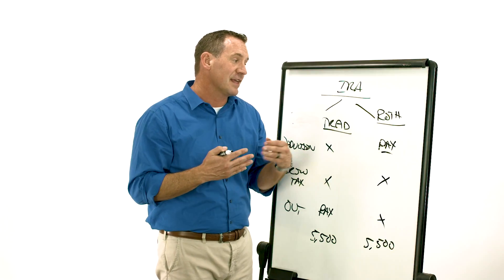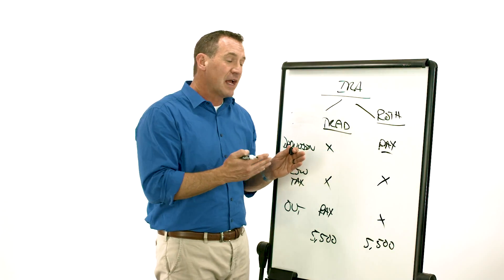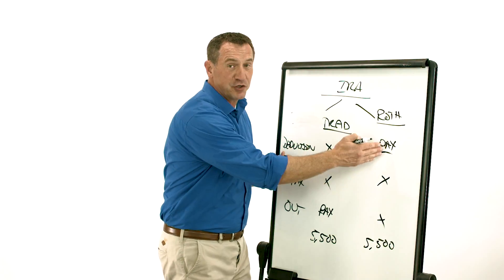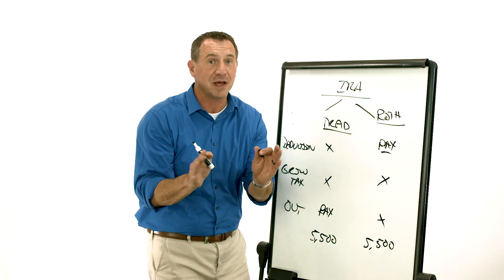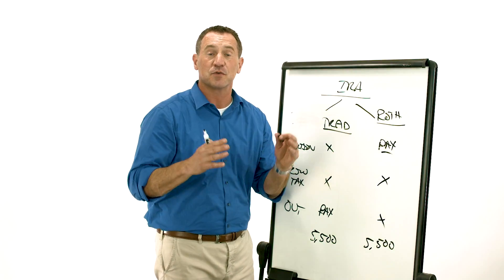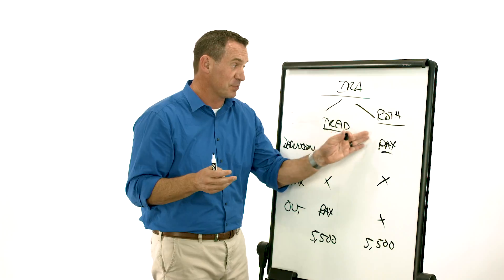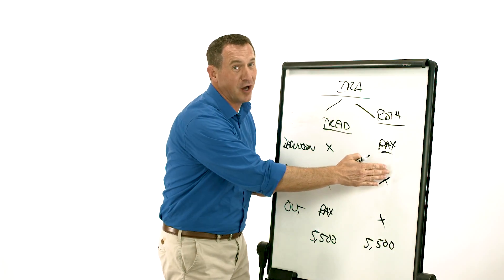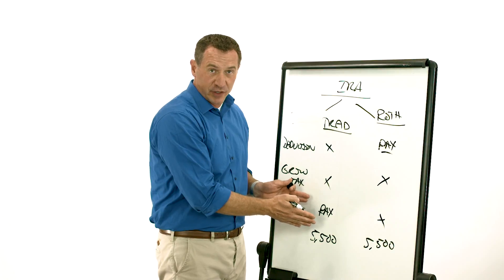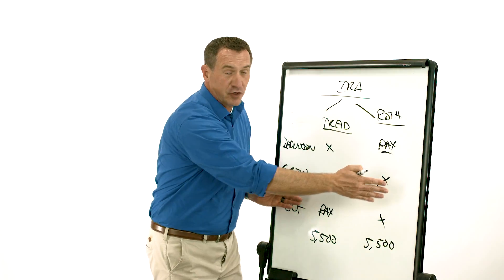But what I like is with a Roth, you can actually do a non-deductible traditional IRA and then convert it to a Roth later. So if you make too much money, I can backdoor it into a Roth. So look at some of my videos on what's called the backdoor IRA. They're pretty cool. You can get into a Roth down the road, the backdoor Roth. You just make a non-deductible traditional contribution and then convert it.